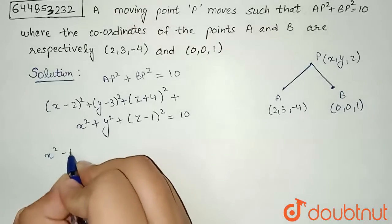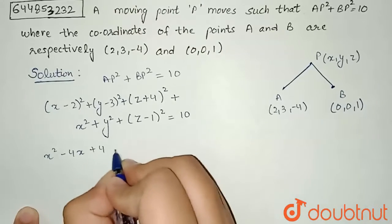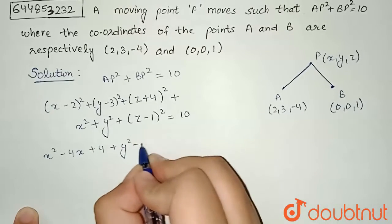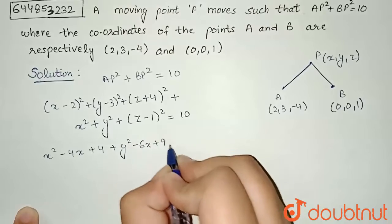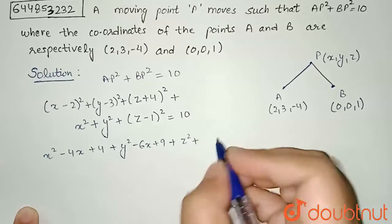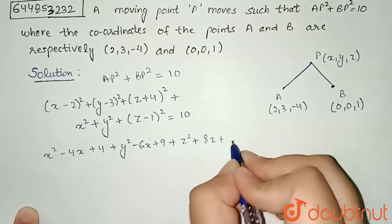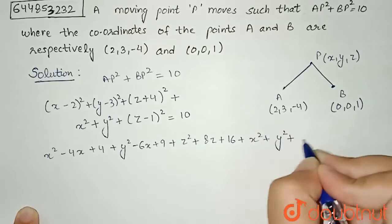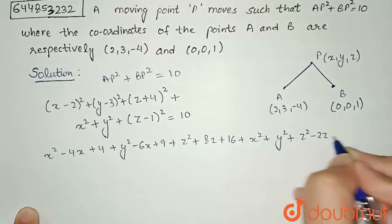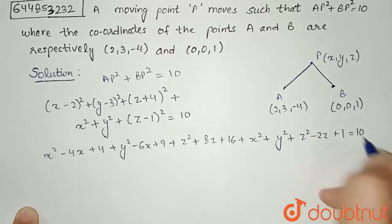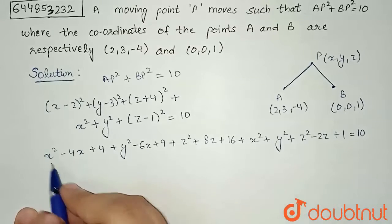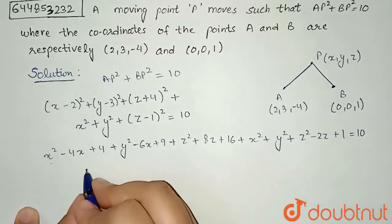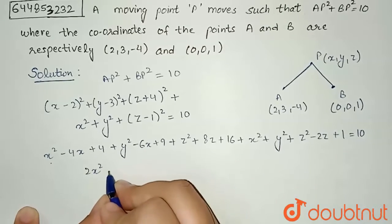I will get x² - 4x + 4 + y² - 6y + 9 + z² + 8z + 16 + x² + y² + z² - 2z + 1 = 10. Now, we can see x² here also, x² + x² + x². Similarly, y² also twice and z² also twice.